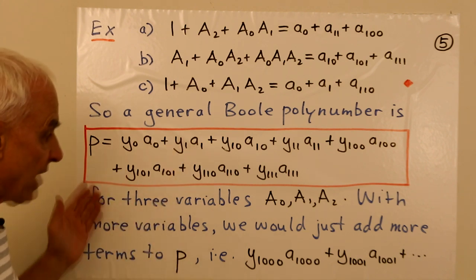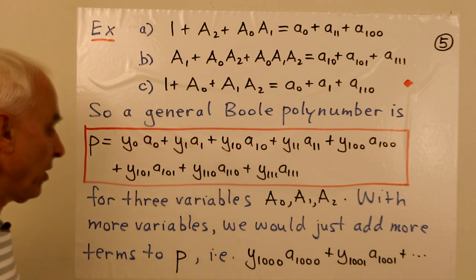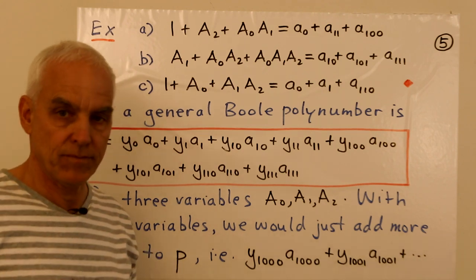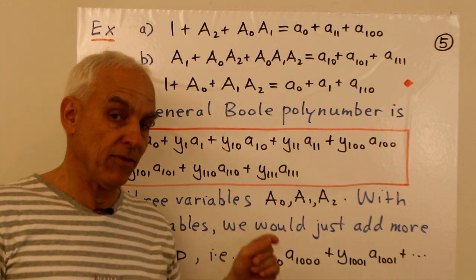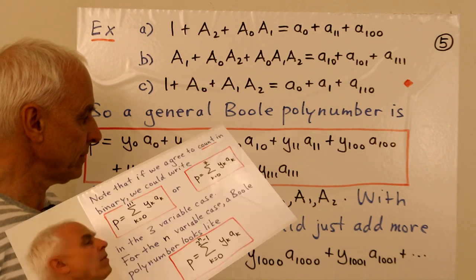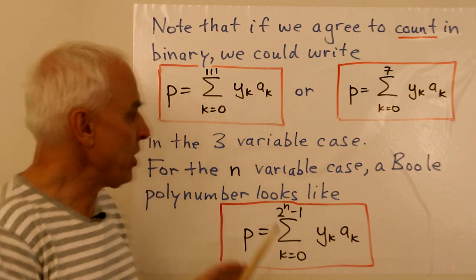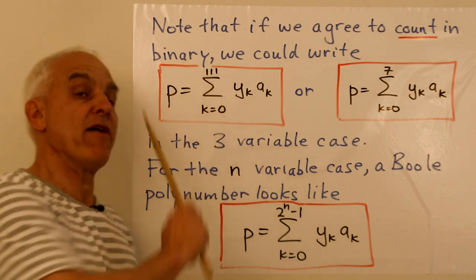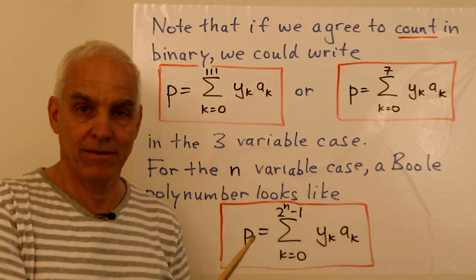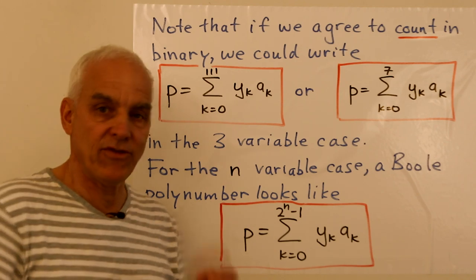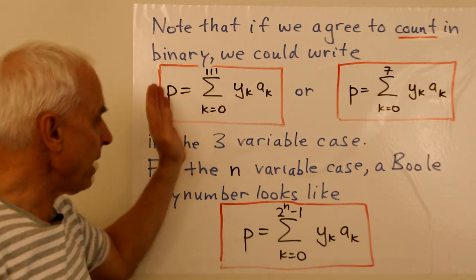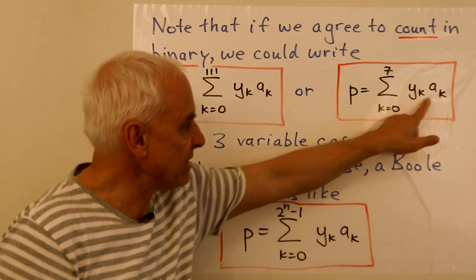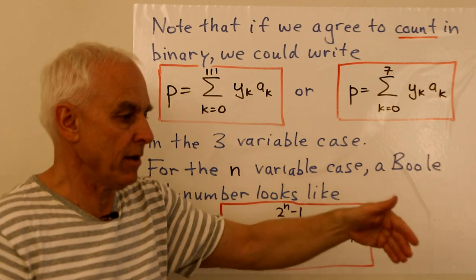And with more variables, we would just add more terms to this. So if we had a fourth variable, then we'd have to add a y8 times a8, and then a y9 times a9, and so on, up to y15 times a15. So note that if we agree to count in binary, we could summarize or write more concisely that expression by saying that p is the sum from k equals 0 to 7 of y sub k times a sub k. Have to, of course, interpret this 111 as 7 rather than 111.